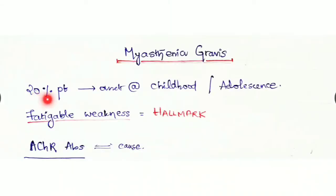This condition, myasthenia gravis, in 20% of patients is seen at the onset of childhood or adolescence. The hallmark is fatigable weakness.